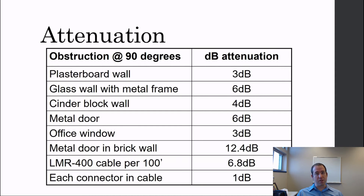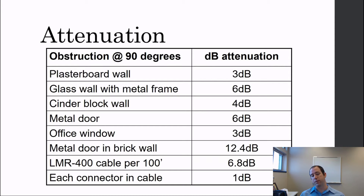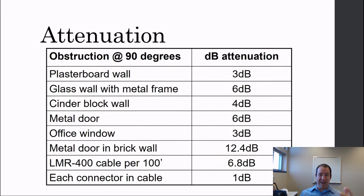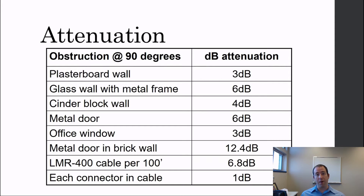Attenuation is basically signal loss — because these signals have to go through stuff, which affects signal strength. Going through drywall, a cinder block wall, a metal door, or a window all cause attenuation. This loss of signal is important when planning your network — you need to try to eliminate or avoid attenuation, or at least take it into account when planning how many access points you need and where to place them so people can get the signal they need.